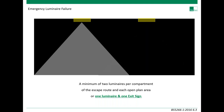To avoid emergency luminaire failure leaving an area unlit, it is considered good practice to have a minimum of two luminaires per compartment of the escape routes and each open plan area, or one luminaire and one exit sign. In the event of a luminaire failing, there is another one able to provide some form of emergency lighting for that compartment or room.